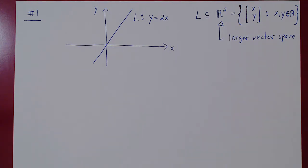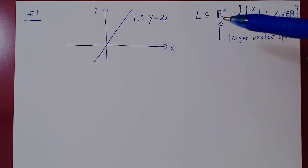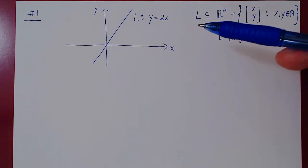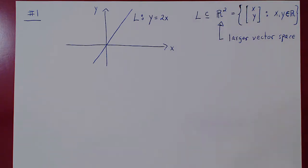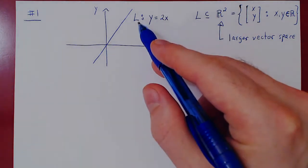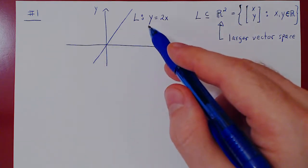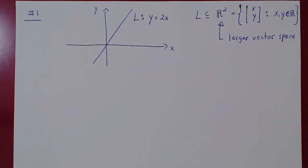We'll actually do something simpler in this case. If you remember the first corollary of the subspace theorem, it was to prove that the span of any vectors is always a vector space. So here's the question: can we express the line given by the equation y equals 2x as the span of something?